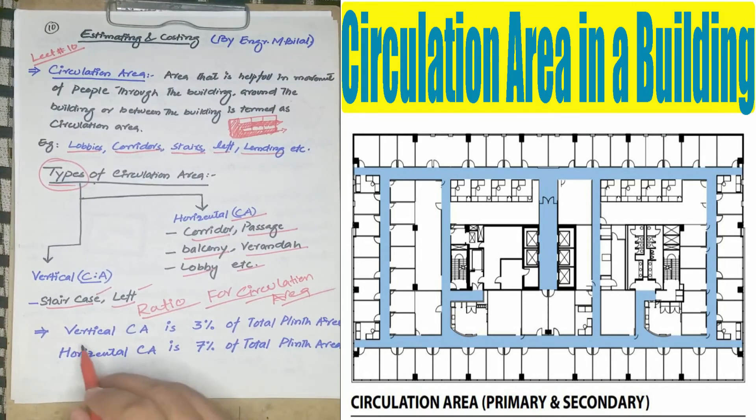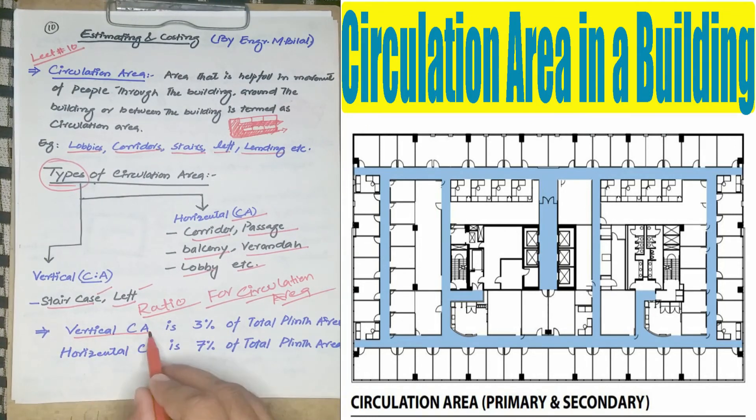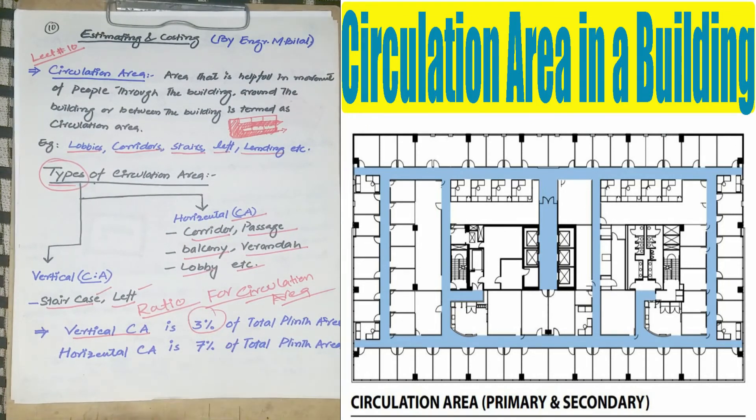For vertical circulation area, there is 3% of the total plinth area. Not the plot area—the covered area is called plinth area. The horizontal circulation area is 7% of the total plinth area.